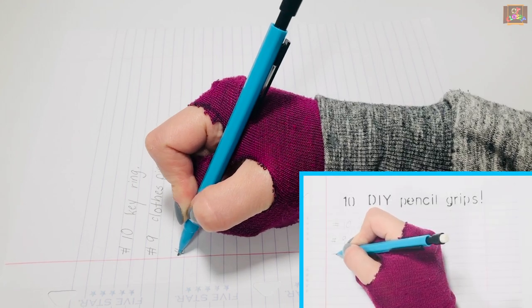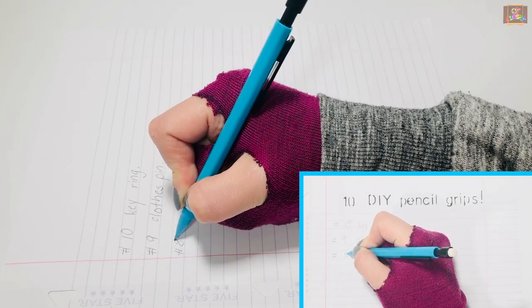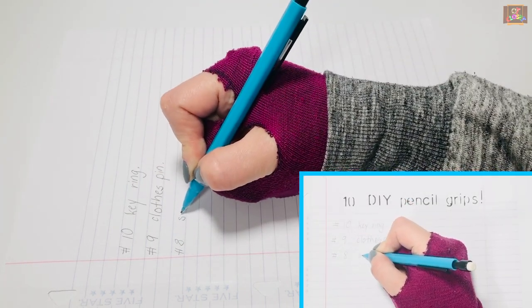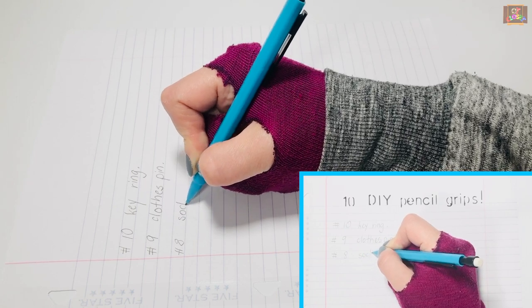The sock helps the middle, ring, and pinky finger stay tucked inside the palm. It also allows only the thumb and index finger to hold the pencil.